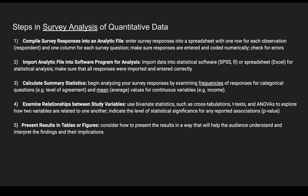The next step — one of the last steps once you've cleaned and formatted your data and created new variables — is examining relationships between study variables. You can use bivariate statistics such as cross-tabulations, t-tests, and ANOVAs to explore how variables are related to one another. You can indicate the level of statistical significance for any reported associations by choosing a p-value. A commonly used threshold is 0.05 — if you find a p-value in bivariate analysis that's less than 0.05, you can have confidence making the claim that it's statistically significant.